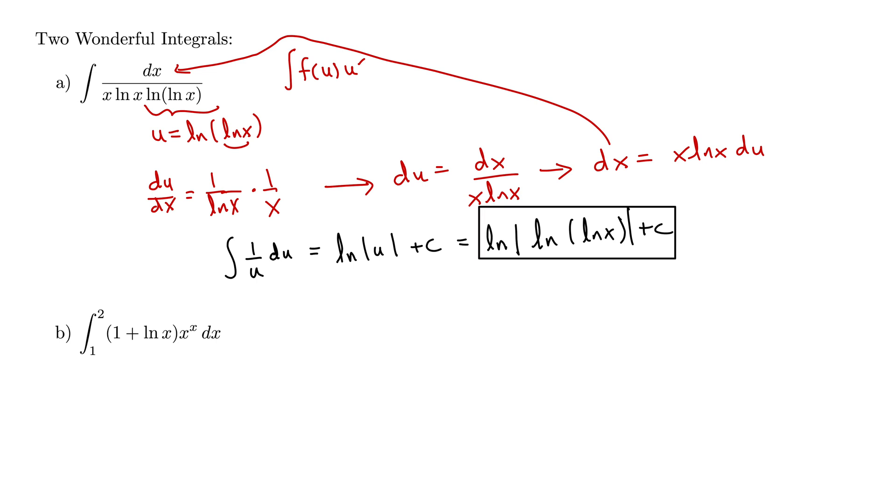Let's try part b. Here we have the integral from 1 to 2 of the quantity 1 plus natural log x, all times x to the x, dx. Again this is going to require u substitution. Pause the video, see if you can come up with a u that works for this integral.